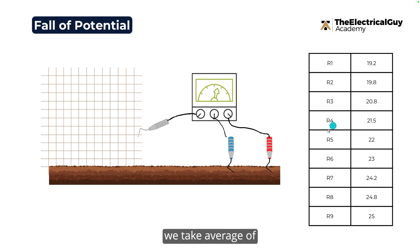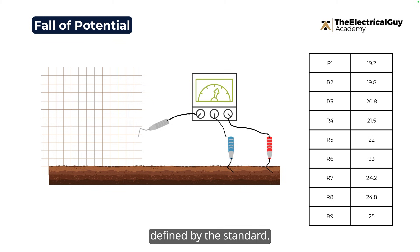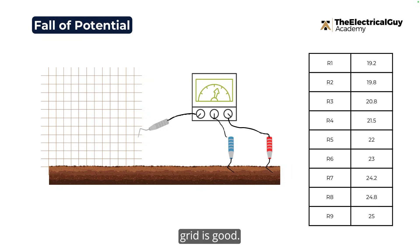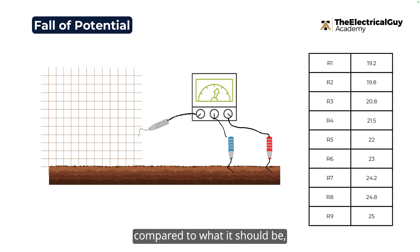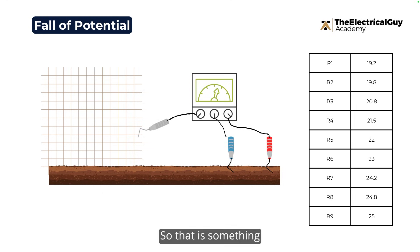Once we have all the readings, we take the average of the middle three or four values. That average resistance should ideally be less than the values defined by the standard. If it is, the health of the earth grid is good and the impedance is low enough to handle fault current. If the resistance is higher than it should be, something is wrong — maybe the earth grid is broken somewhere, or there is corrosion.